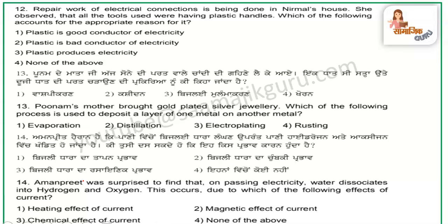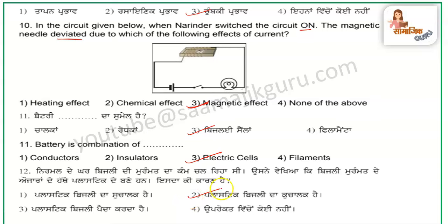Question number 12: repair work of electrical connections is being done in Nirmal's house. He observed that every tool has a plastic handle. Why? Because plastic is a bad conductor of electricity, so it protects the user from electric shock.